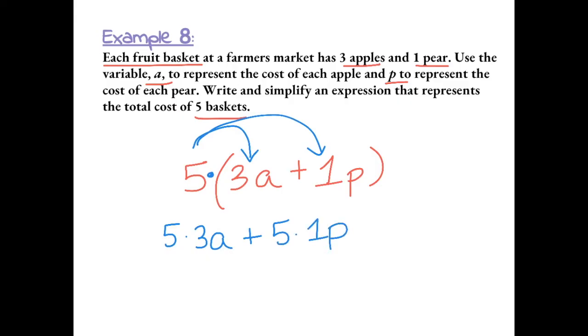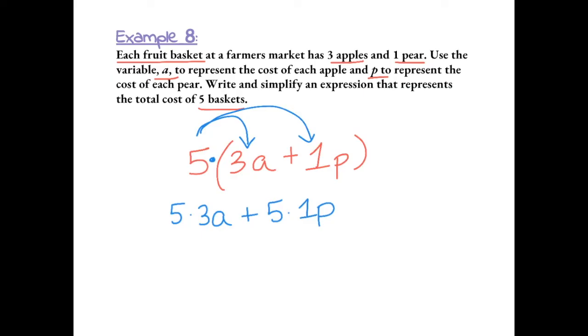Let's simplify. 5 times 3 is 15. Bring down the variable. Plus 5 times 1 is 5. Bring down the variable. 15a plus 5p. These are not like terms because they have different variables, so the expression cannot be simplified anymore.